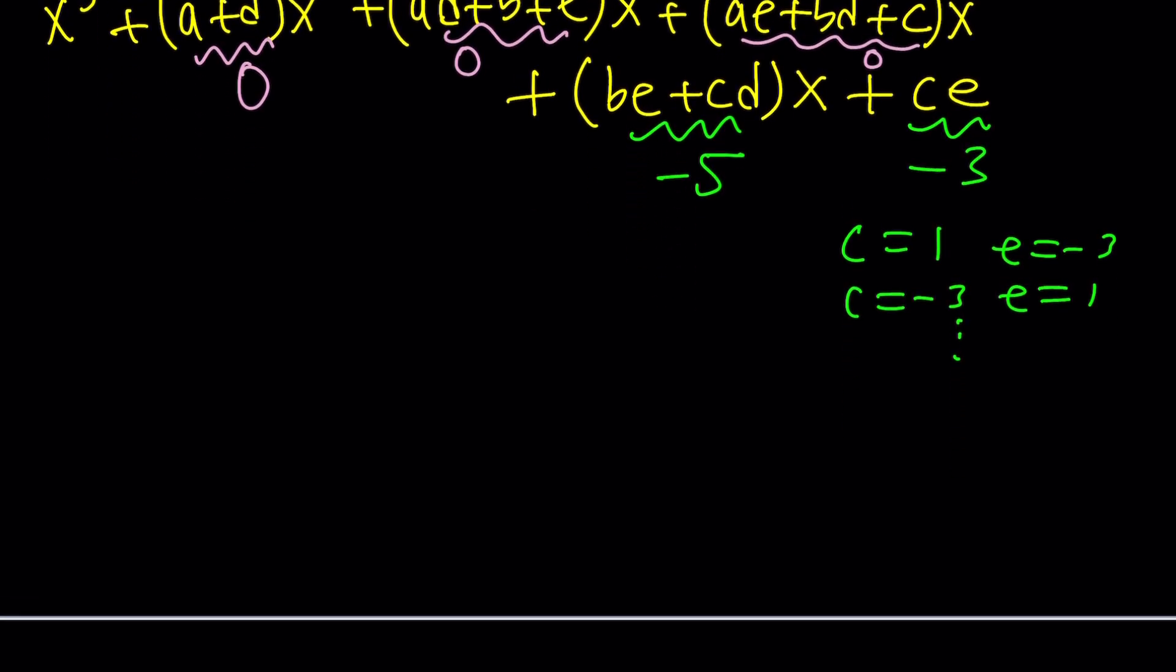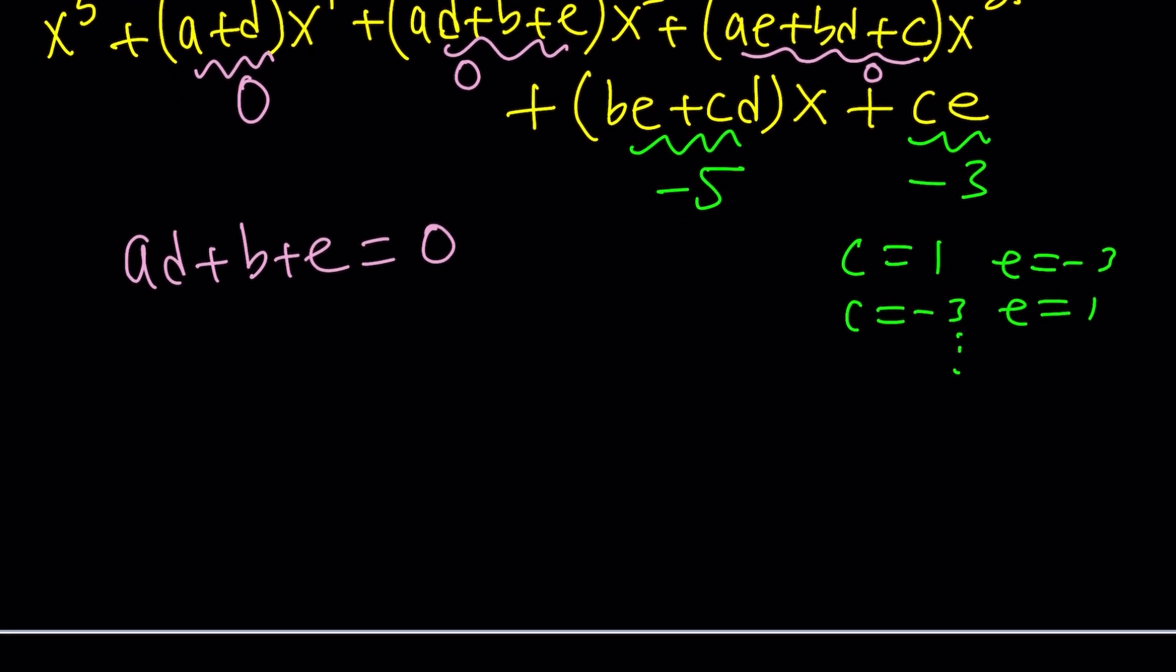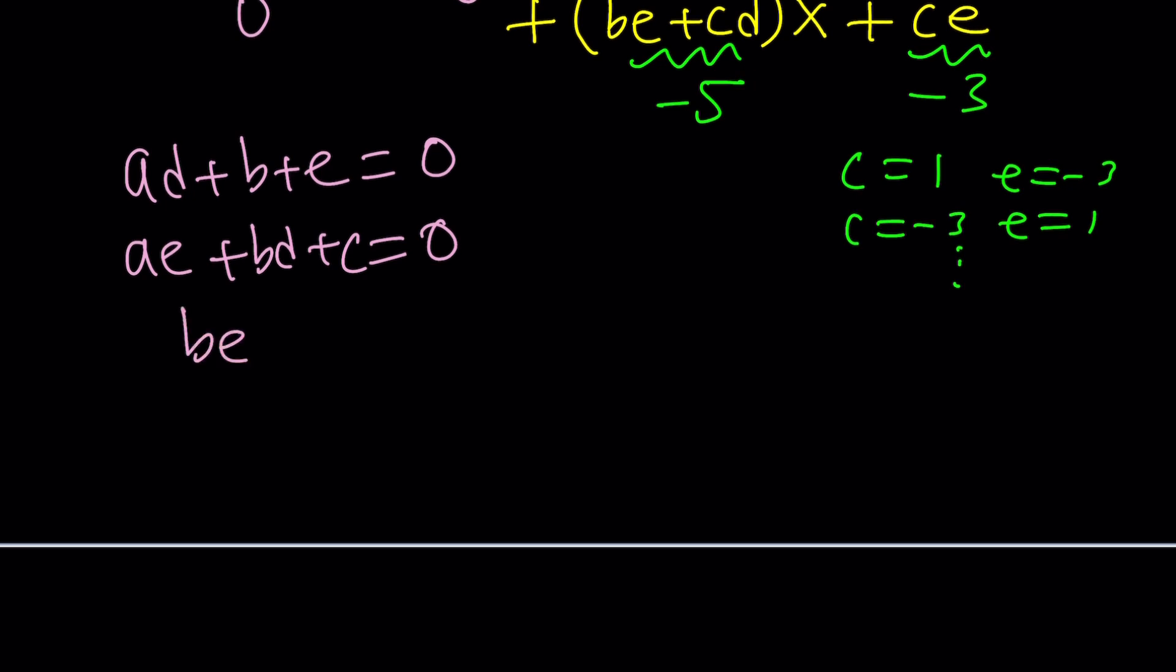So here's what we get from here. ad plus b plus e equals zero, because that's the coefficient of x cubed. And then we have ae plus bd plus c, which is the coefficient of x squared, also zero. And then let's go ahead and write the other equations.